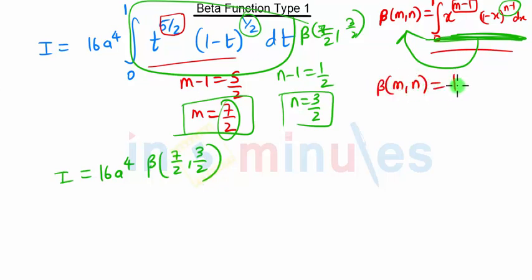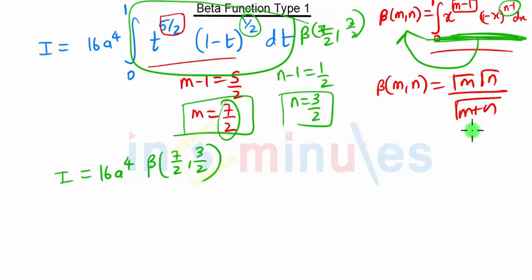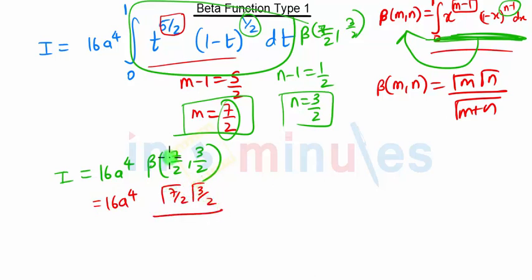Here we are going to use the formula: Beta of m comma n is nothing but Gamma of m into Gamma of n upon Gamma of m plus n. So we get 16 a raised to 4 into Gamma of 7/2 into Gamma of 3/2, and Gamma of 7/2 plus 3/2 is 10/2, which equals 5, so that is Gamma of 5.